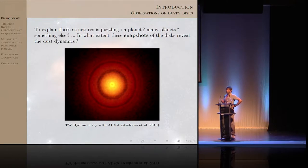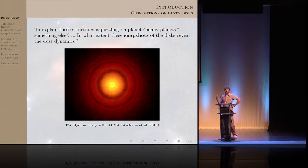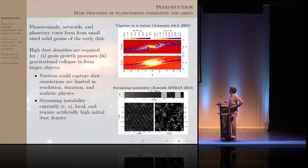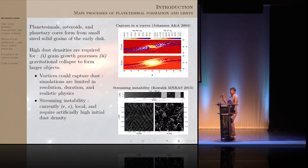The challenge in theoretical astrophysics is to explain these structures, and some processes could be invoked for that, like the presence of a planet, or many planets, or some instabilities. We would also like to know if these structures are transient or longer lived, because these observations are only snapshots of the disk evolution. And in particular, the dynamics of dust grains is very important because planetesimal asteroids and planetary cores are formed from these millimeter or micrometer grains.